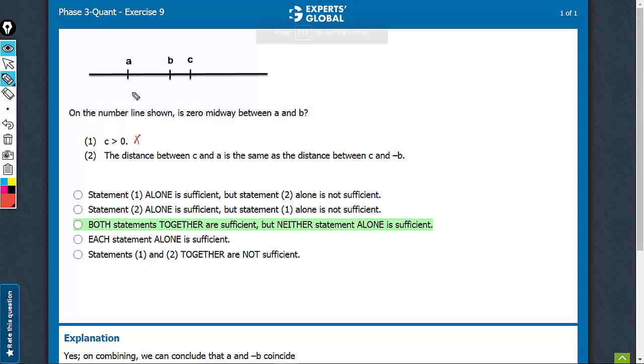The distance between C and A is the same as the distance between C and minus B. Many students will think this is sufficient, suggesting that A coincides with minus B, and therefore,